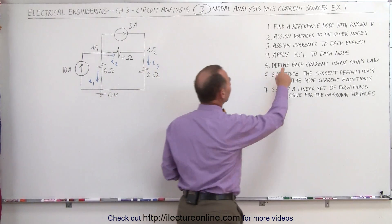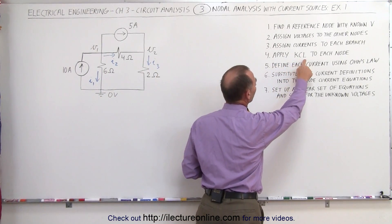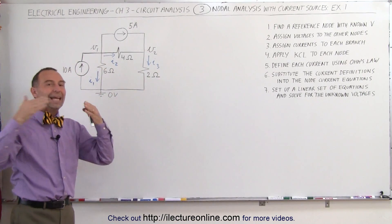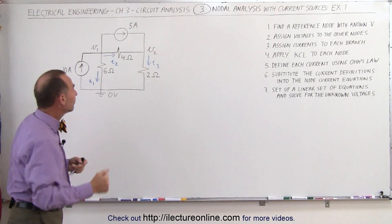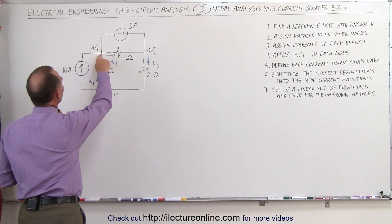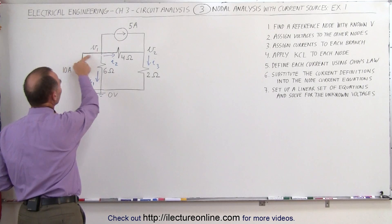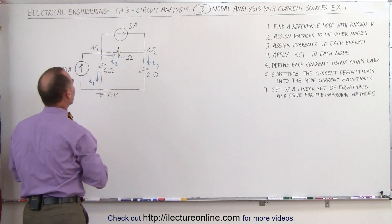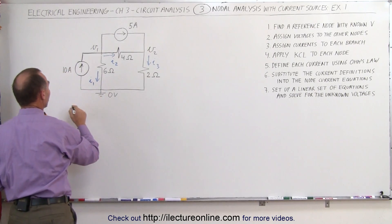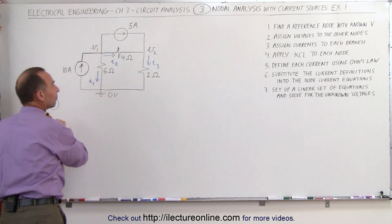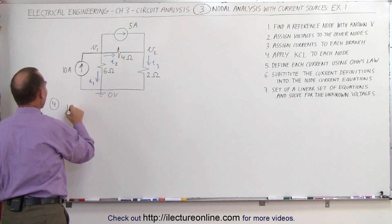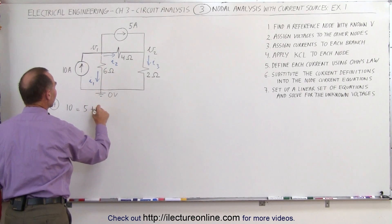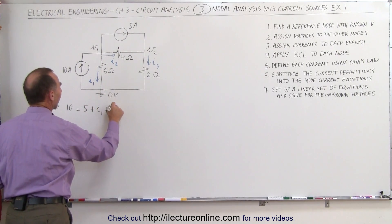The next step is to apply Kirchhoff's current law to each of the nodes. We have two nodes, so we add up all the currents entering the node and set it equal to all the currents leaving the node. At this first node, we see a 10A current entering, a 5A current leaving, I1 leaving, and I2 leaving. So the first equation is: 10A equals 5A plus I1 plus I2.